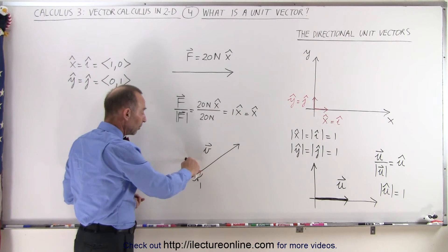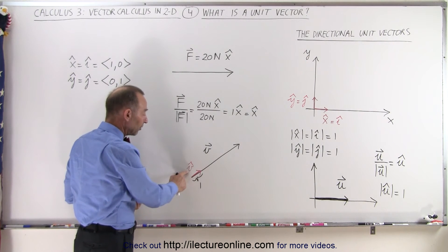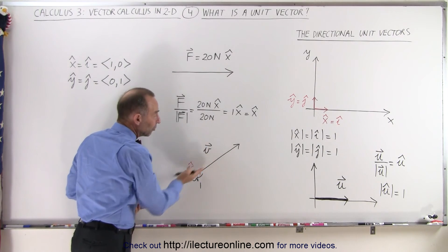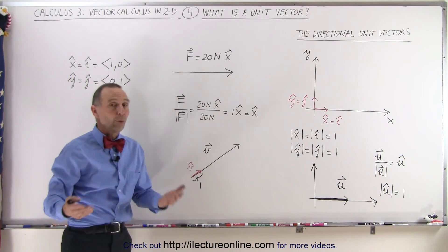And then if we want to represent the unit vector pointing in the same direction as v, we write it as v with a little symbol, unit vector symbol on top of that, and notice that the length of that unit vector will be equal to 1, and it's not necessarily pointing in either the x or the y direction.